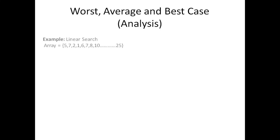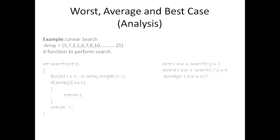Suppose we have an array with elements: 5, 7, 2, 1, 6, 8, up to n elements. We have a function int search(k) that searches for element k in the array. There is a loop: for i = 0; i < array.length — if we find the element we return index i, otherwise we return -1. This simple function performs linear search.